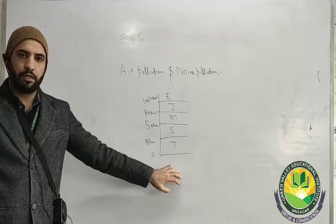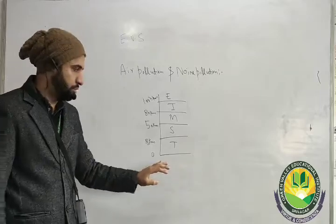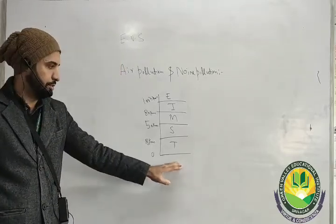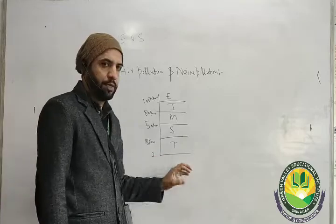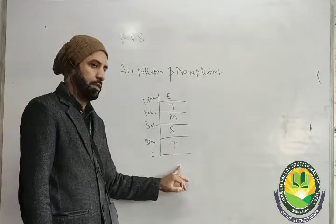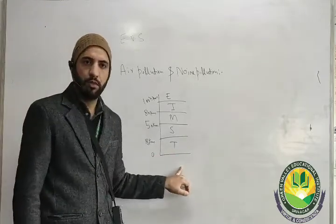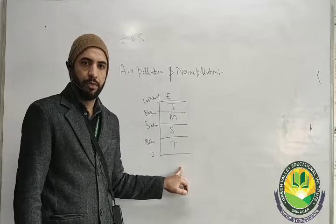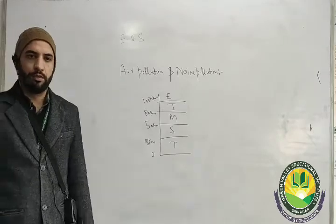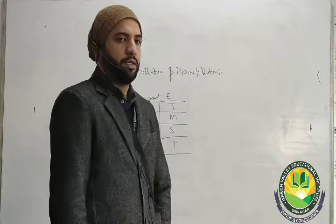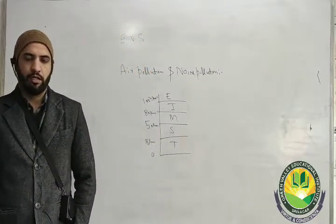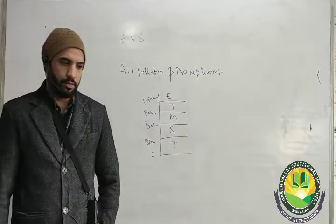Now, talking about troposphere — we live in this layer. In the troposphere, weather conditions also take place. Here we have 78% nitrogen, 21% oxygen, and 0.03% carbon dioxide and other gases.